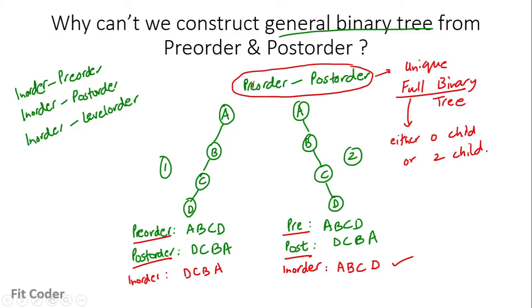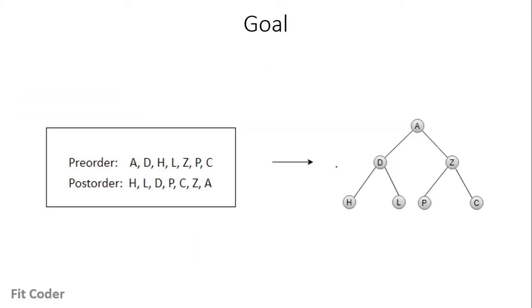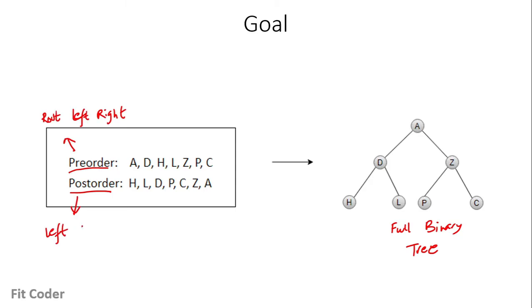Now let's see how we can do that. The goal is: given pre-order and post-order traversals, we have to construct a full binary tree where every node has either 2 children or 0 children. We know that pre-order is root-left-right and post-order is left-right-root. So the last node in post-order is the root, and the first node in pre-order is also the root. Here A is the root node.